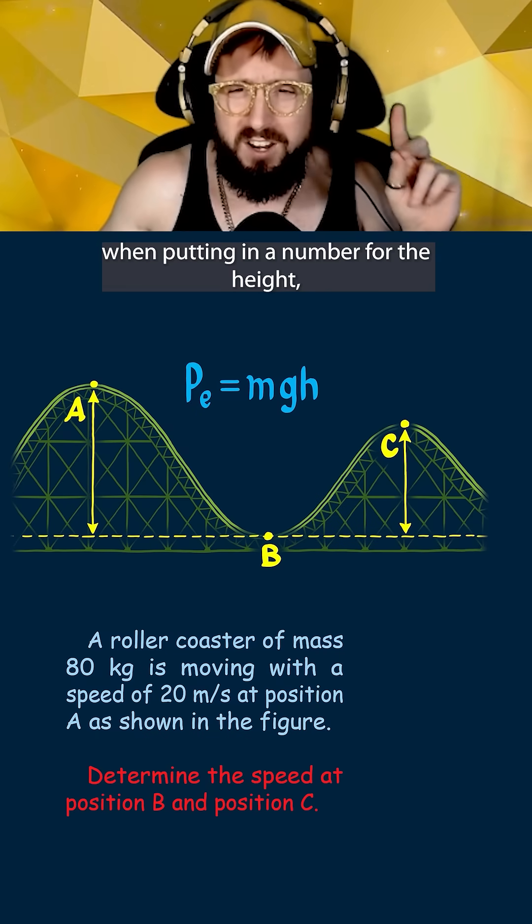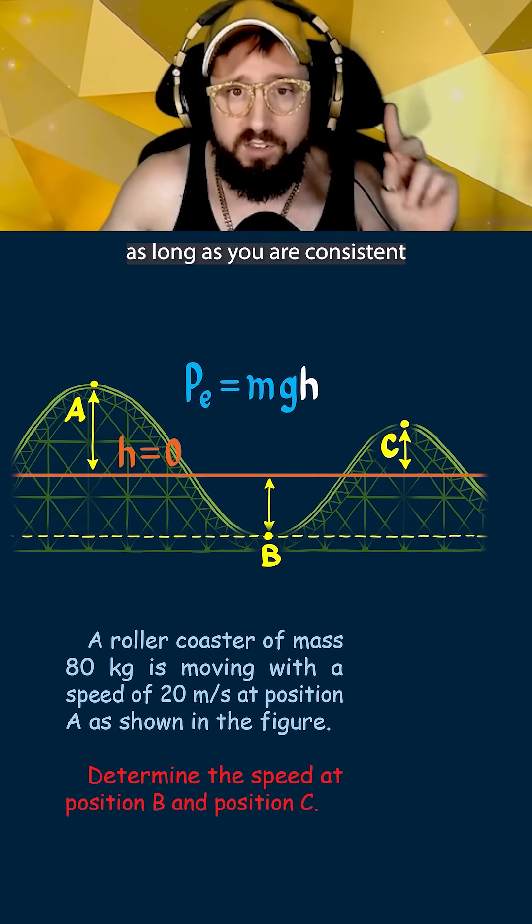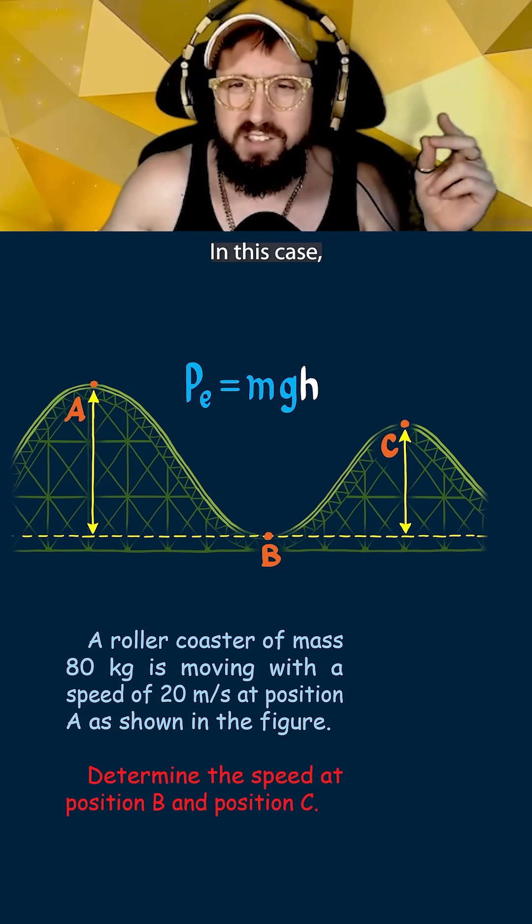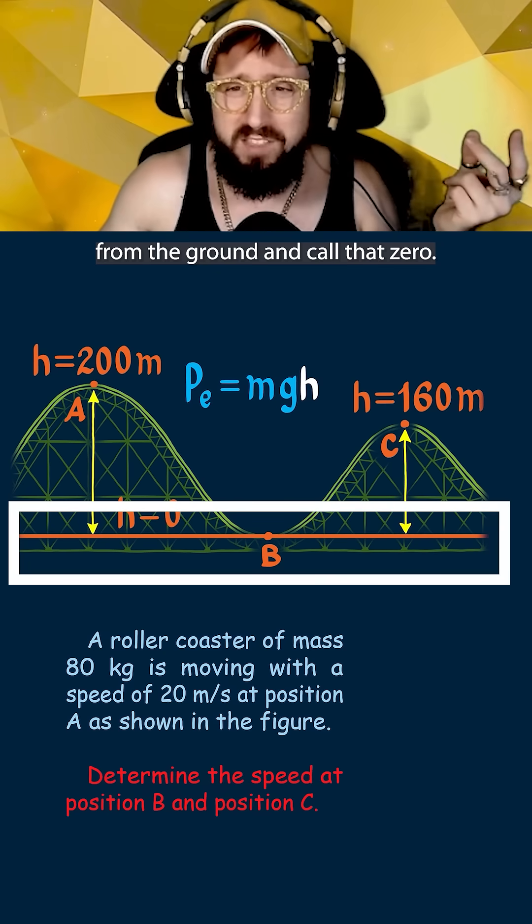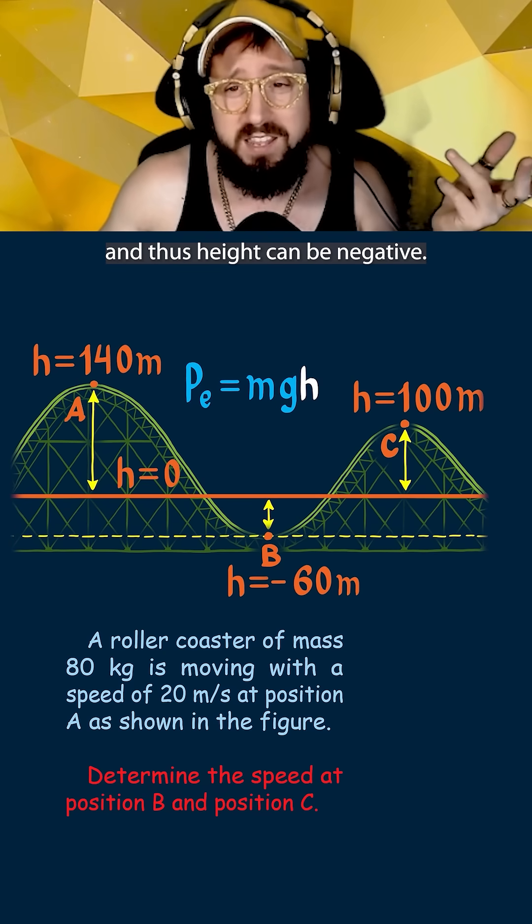Quick note, when putting in a number for the height you can technically measure it from any spot as long as you are consistent and measure it from the same spot at both point A and point B. In this case we're going to measure the height from the ground and call that zero, but you may see other problems where the height is measured from somewhere in the air and thus height can be negative.